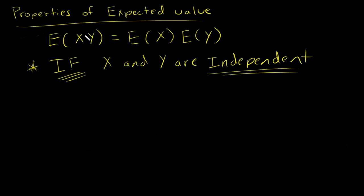I want to talk about the expected value of a product. The expected value of two random variables, X and Y, equals the expected value of X times the expected value of Y, if X and Y are independent. This is a really important thing you need to keep in mind when you're trying to use this property.